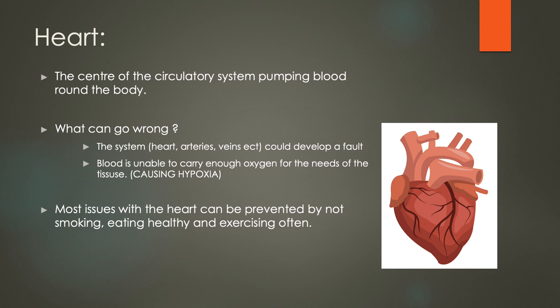The next part of the body we're going to look at is the heart. The heart is the centre of the circulatory system, pumping blood around the body — it's a pump. It pumps blood to the extremities of the body and all around. The heart or the veins and arteries could get clogged and cause a fault. Blood may also be unable to carry enough oxygen for the needs of the tissue. If the heart stops working, we can't get enough oxygen to the different organs within the body, and that's where we could encounter something called hypoxia, which we'll look at later on.